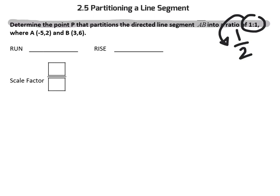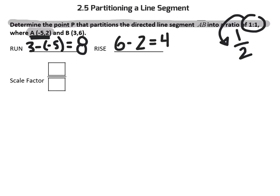They tell us A is the center of dilation in this process. Remember, we need to know our rise and our run to do a dilation. To find the run, we take 3 and subtract negative 5 and we get 8 for our run. Our rise would be 6 minus 2, giving us 4 for our rise. We've already found our scale factor to be 1 half.